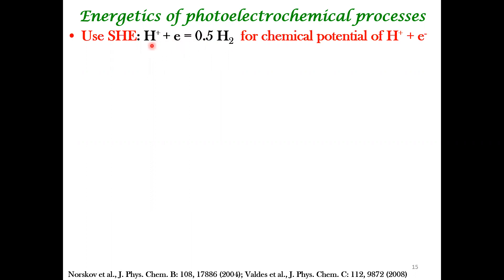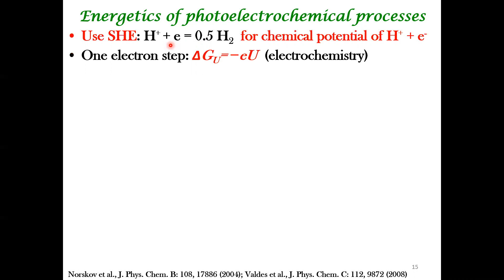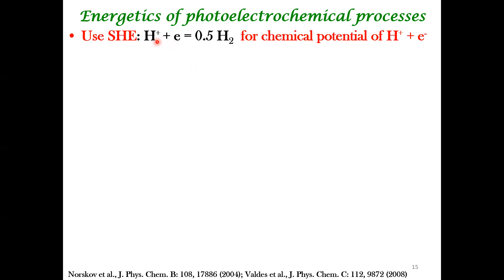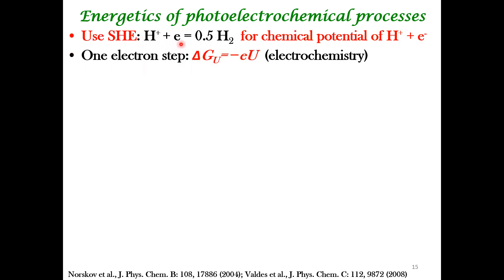The standard hydrogen electrode is defined at a specific pH — that's how you define the zero of the electrochemical potential series, which you've seen since high school. But if you want to operate at different pH, the change in chemical potential of the proton is related to changes in pH away from the standard hydrogen electrode. Likewise, the change in free energy of the electron is given by delta G equals minus e times U.